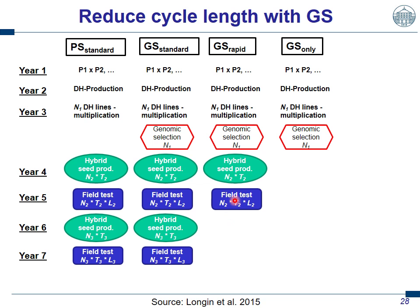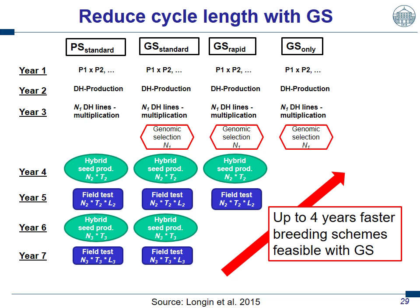If we are even more keen on genomic selection, we can assume our genomics are so good that we don't need to go to the field anymore — we make a genomic selection and then go directly to pre-registration trials. This would speed up the breeding cycle by four years, which would be a really tremendous change.